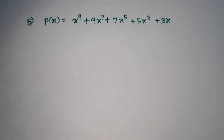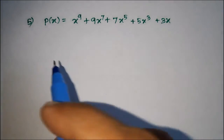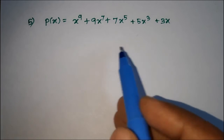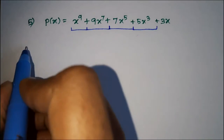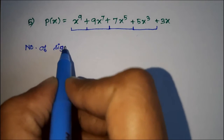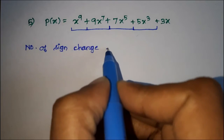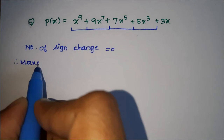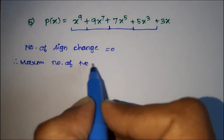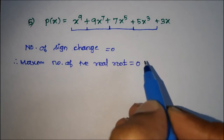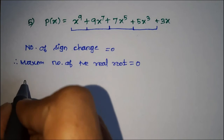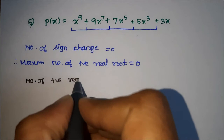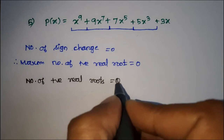Total number of real roots — exact value. First, maximum number of positive real roots: check the number of sign changes in P(x). All signs are positive, so the number of sign changes is 0. Therefore, the maximum number of positive real roots is 0. So the number of positive real roots is equal to 0.